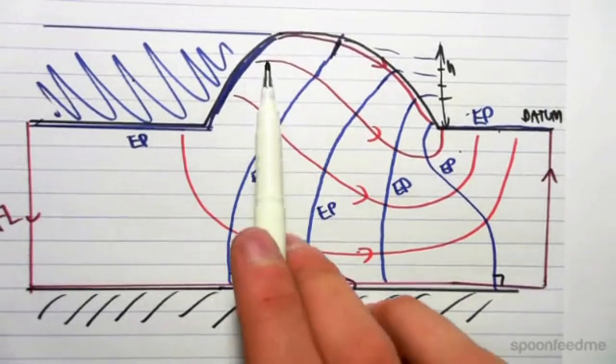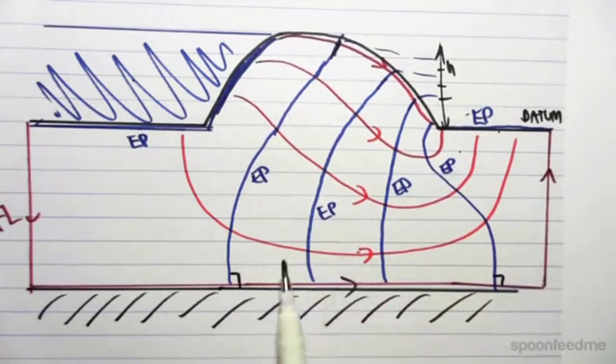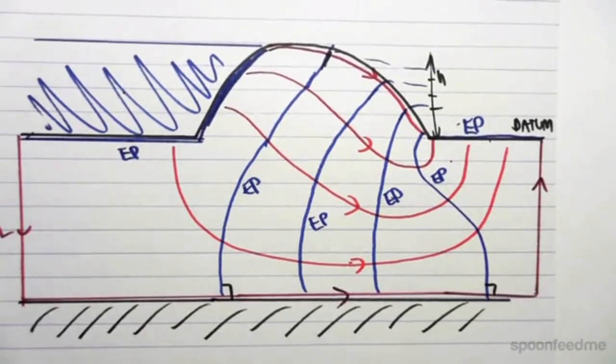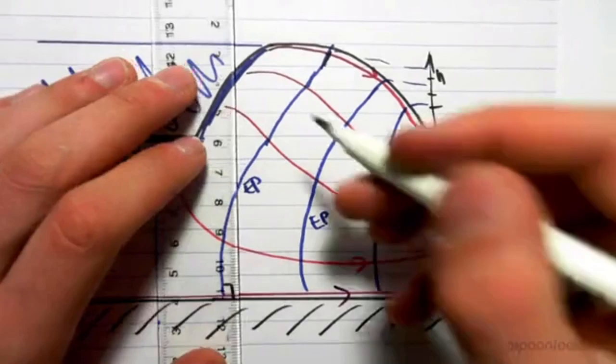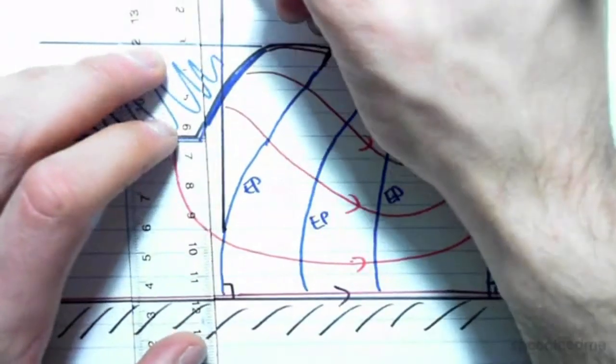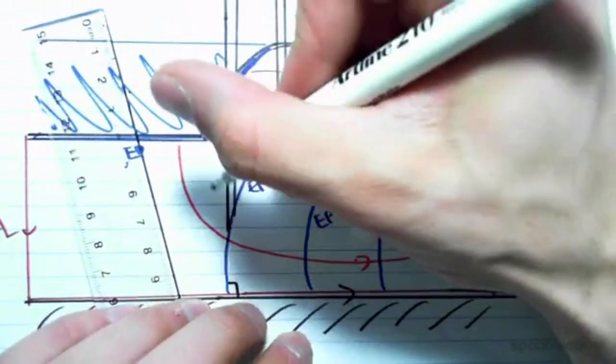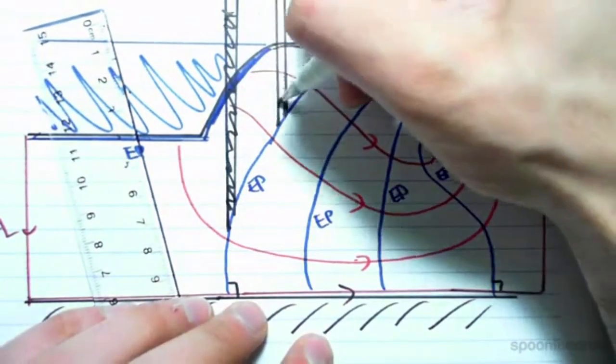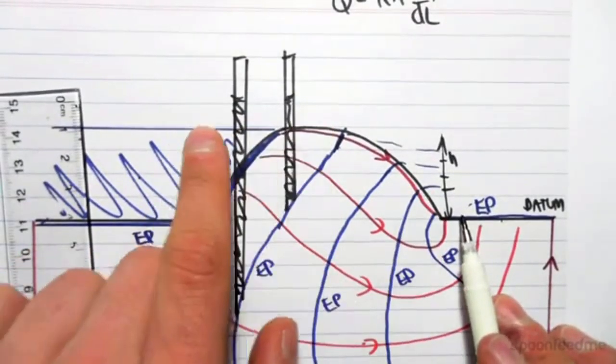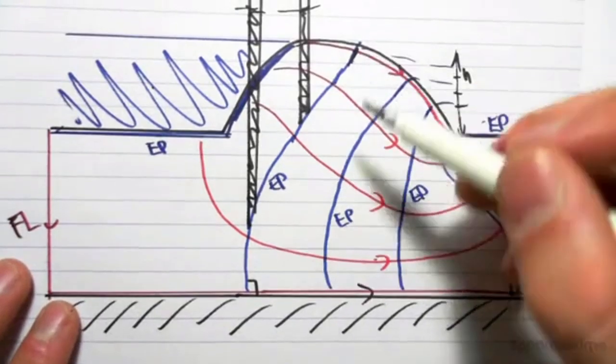So this models the flow of the water to this point here with these flow lines. These blue lines now represent the places of equal head. What that means is, if I were to come and stick a tube or a standpipe at any one of these points, so let's say I stuck a standpipe in there, and we stuck a standpipe at this point, the water would rise to the same point above the datum. So the water would rise to the same point above the datum. They are at the same height. So that's what an EP is. An EP is a place of constant head.